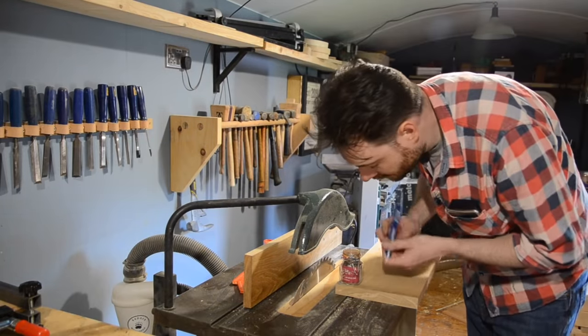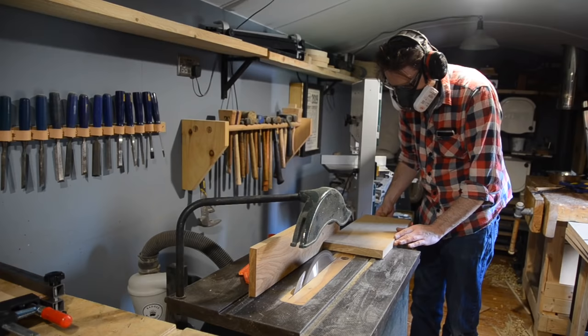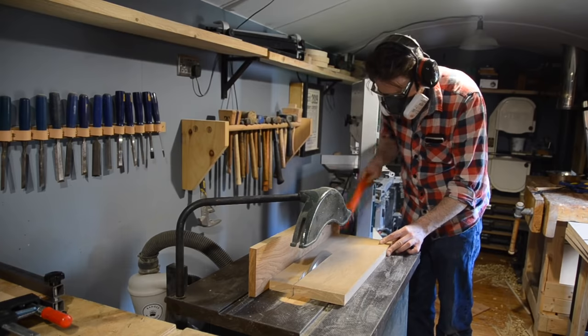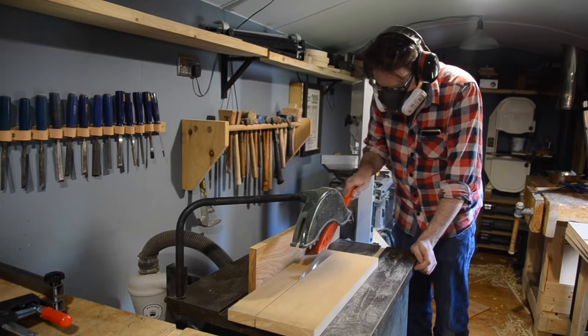I've got these little Kilner jars and they're the widest of the jars I've got, so I use them to work out how thick I want the shelves to be. I can then get the board ripped down to this width.